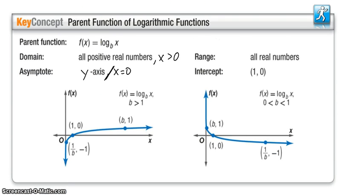So graphing these, since this is the inverse of the exponential, our range is now the all real numbers instead of our domain. And our domain is all positives, such as x is greater than 0. Our asymptote is no longer the x-axis, it's now the y-axis, or the line x equals 0. And our intercept, instead of being 0, 1, it's 1, 0. So it's pretty much just flipped over that line, y equals x, as compared to the exponential graph.